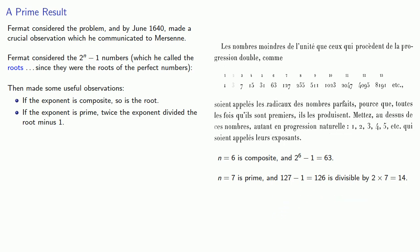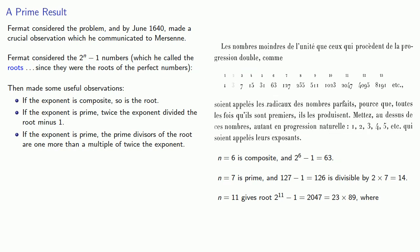And probably the most important of these observations, if the exponent is prime, the prime divisors of the root are one more than a multiple of twice the exponent. So, for example, n equals 11 gives the root 2^11 - 1, which is 2047, and it turns out this number is actually composite. It's 23 times 89, and we notice that 23 is twice the exponent plus 1, and 89 is 8 times the exponent plus 1.